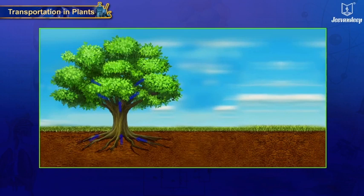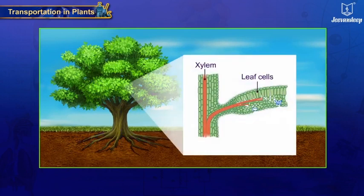Loss of water from aerial parts of the plant in the form of vapor is called transpiration. Transpiration from the surface of the leaves results in a decrease in the water content of the leaf cells. The water lost from the leaf cells is replaced by water from the xylem vessels of the leaf.